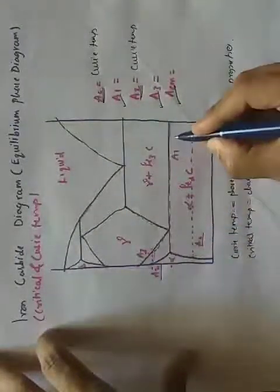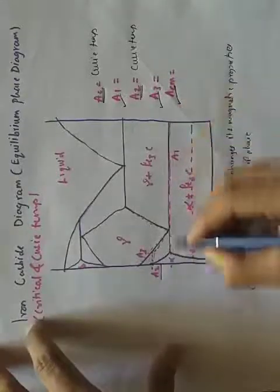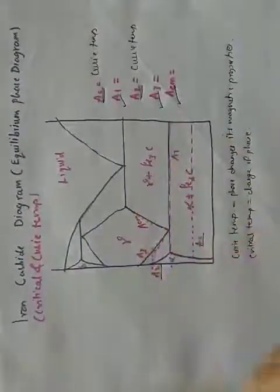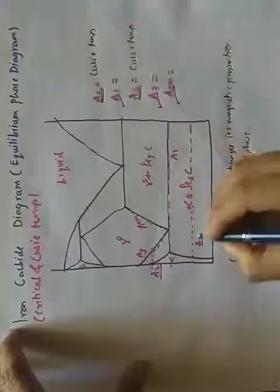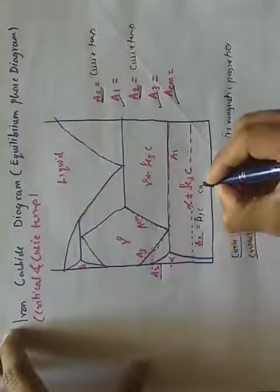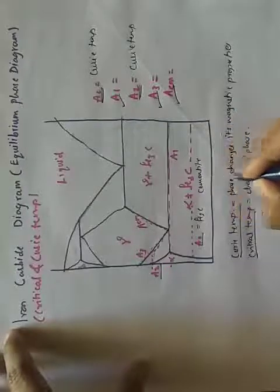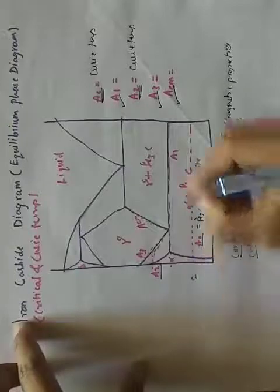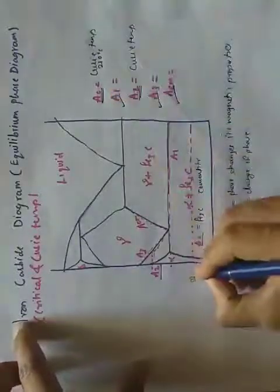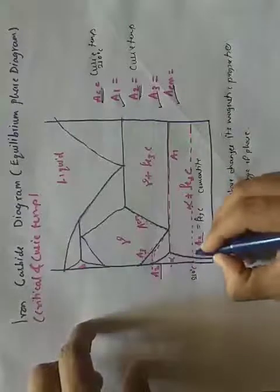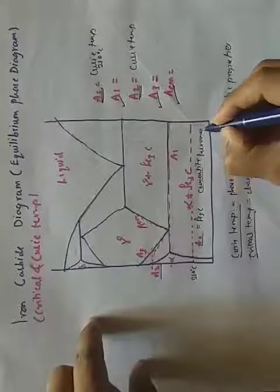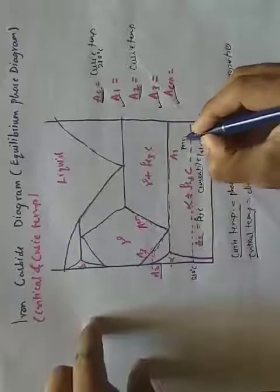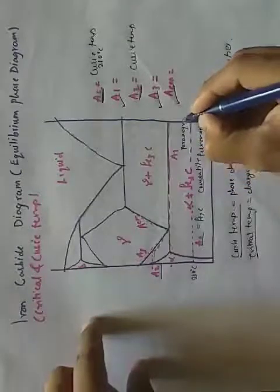A1 is represented on the diagram, A3 is another critical temperature, and ACM is the last one. A0 is the Curie temperature for cementite — that is, cementite changes its magnetic properties at A0, which is 210°C. Up to 210°C, cementite is ferromagnetic.